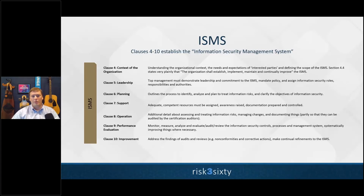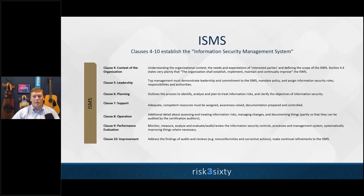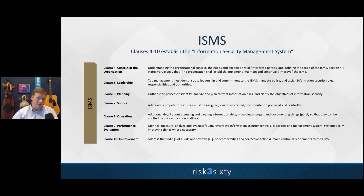Clause ten is about improvement. When you sign up for ISO 27001 certification, it's an ongoing commitment. The initial cycle is three years — a certification year and then two surveillance years. You'll want to maintain the certification, so you're tasked with determining how to continue improving the program. That means taking audit results, moving forward with corrective actions, coming up with new plans and projects that will further reduce risk.